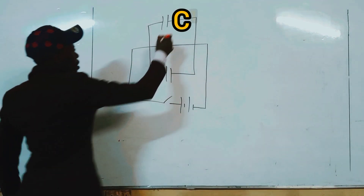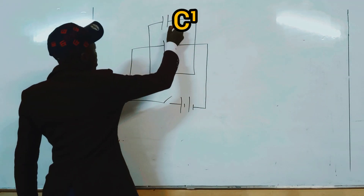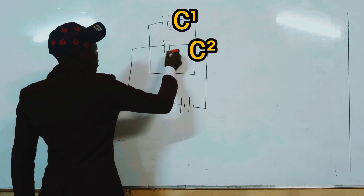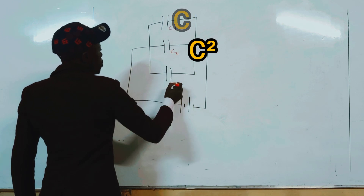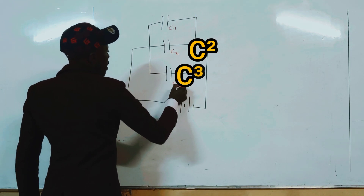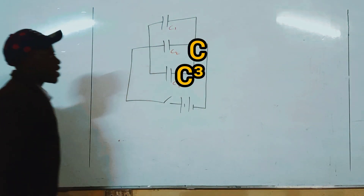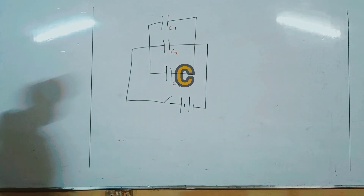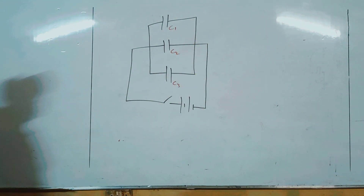Let's call this C1, capacitor 1, capacitor 2, and capacitor 3 — C1, C2, and C3.